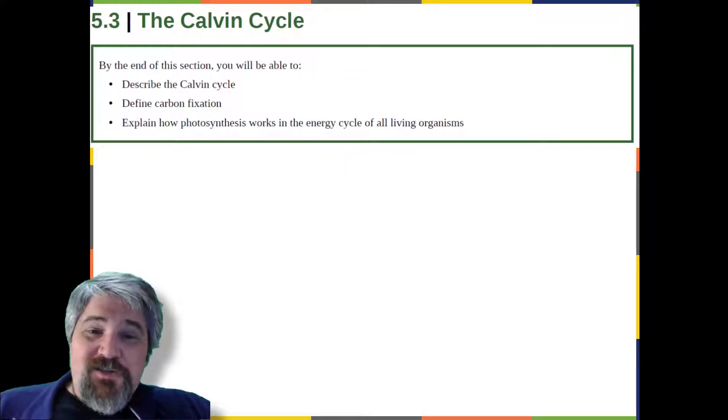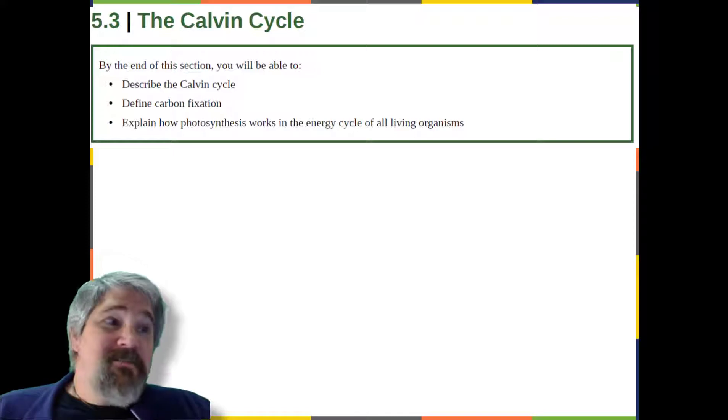By the end of this section, you will be able to describe the Calvin Cycle, define carbon fixation, and explain how photosynthesis works in the energy cycle of all living organisms.